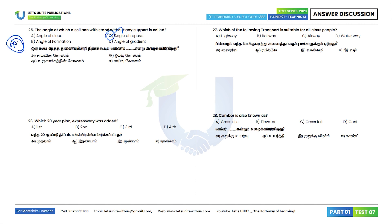26th question: In which 20-Year Plan was an expressway added? The expressway was added in the Bombay Road Plan, which is the Second 20-Year Plan. Option B is the correct answer.